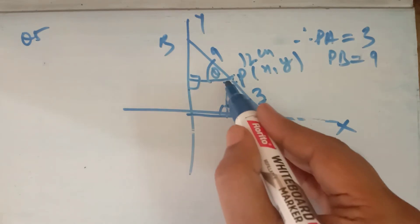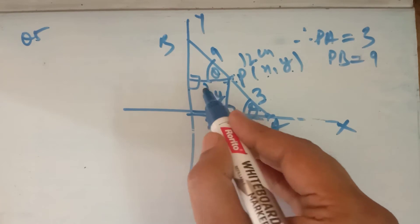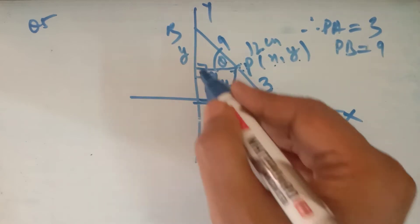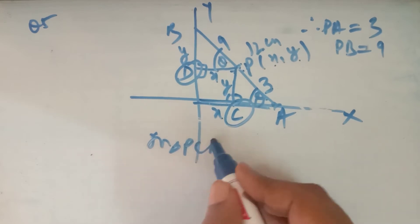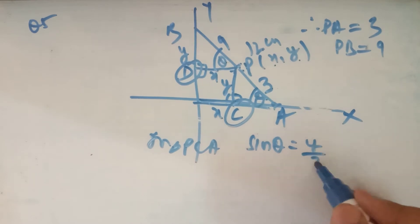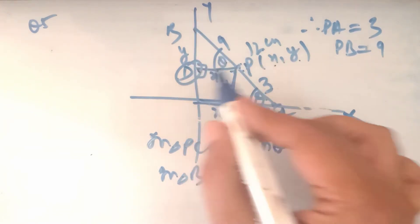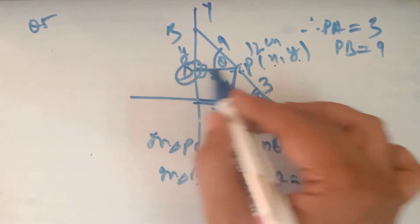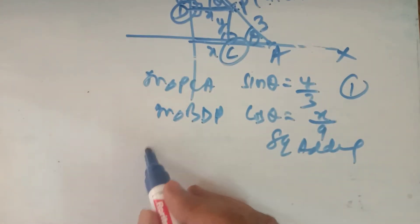This distance is X and this is Y — the coordinates of point P are (X, Y). Consider points P, A, C, and D. In triangle PCA, sin θ = perpendicular/hypotenuse = Y/9. In triangle BDP, cos θ = base/hypotenuse = X/3. Squaring and adding: sin²θ + cos²θ = Y²/81 + X²/9 = 1 — this is the equation of the locus.